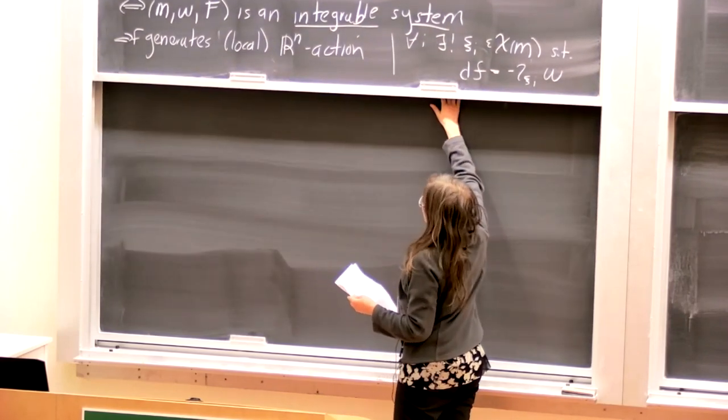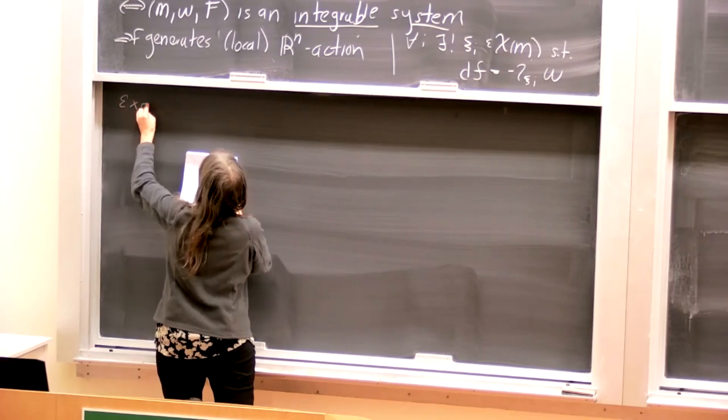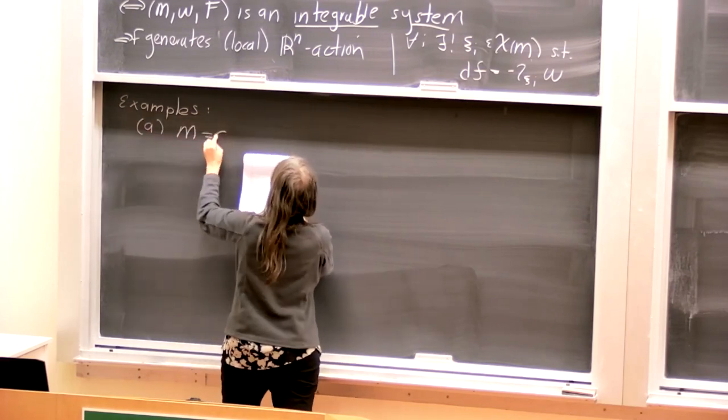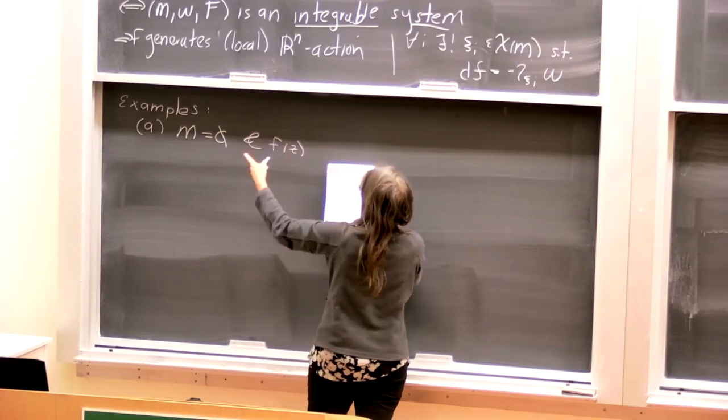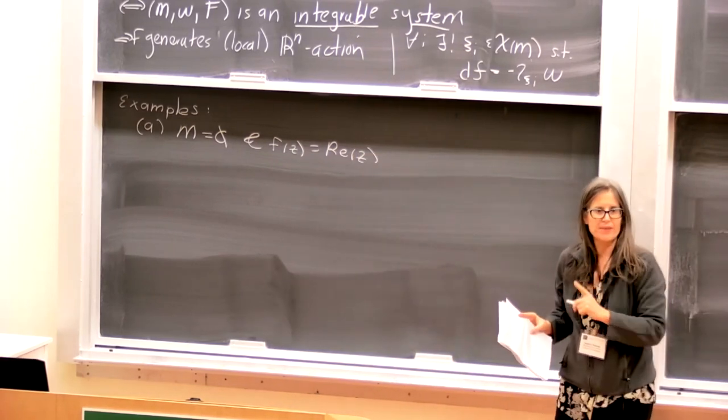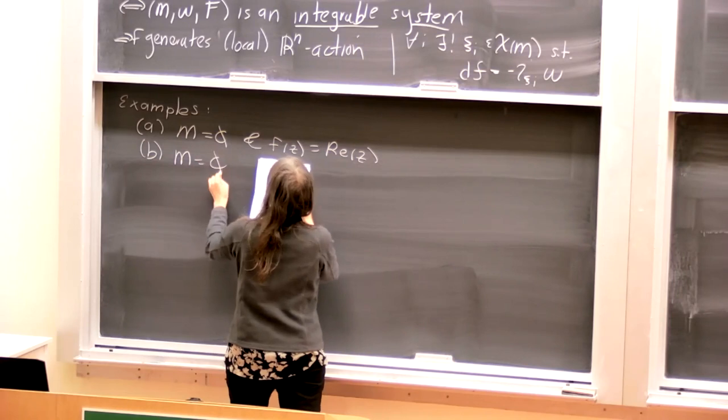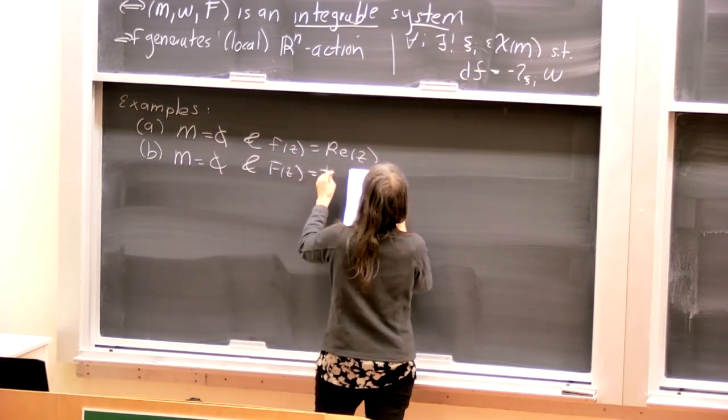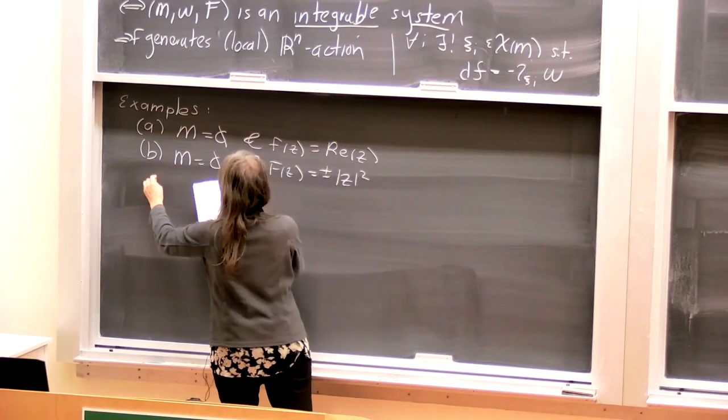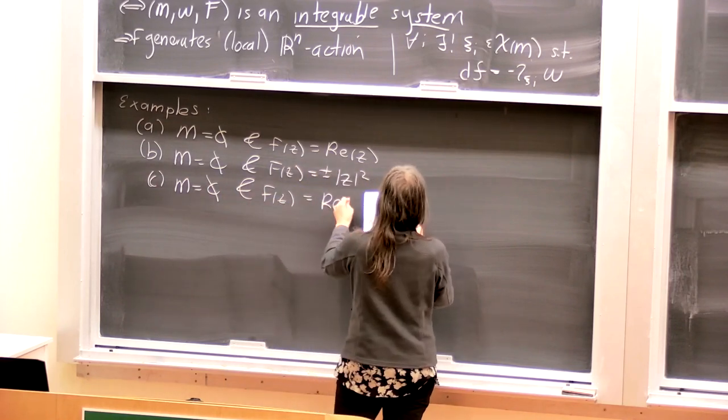Great. So let me give you some examples of integrable systems. First of all, we can let M be C with omega standard. And then we just have one dimension. f of z can just be the real part of z. We can let M equal C and f of z is the norm of z squared.